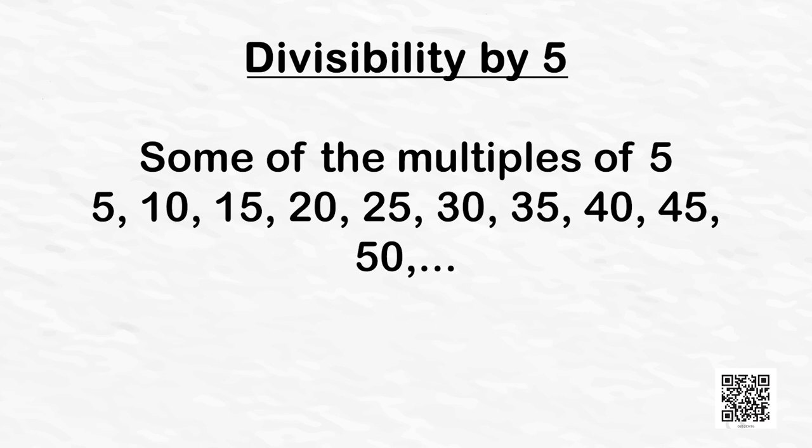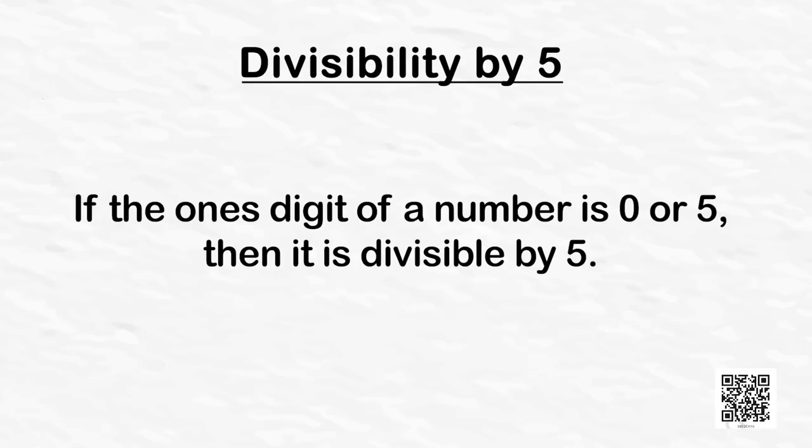Now let's explore more about divisibility by 5. Look at the multiples of 5: 5, 10, 15, 20, 25, 30, 35, 40, 45, 50 and so on. It is clear that the ones digits are alternately 5 and 0 and no other number ever appears in this list. So we get the test of divisibility by 5: if the ones digit of a number is 0 or 5, then it is divisible by 5.